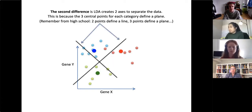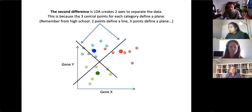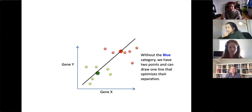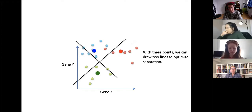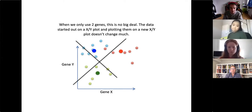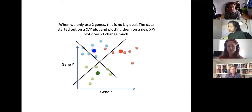The second difference is that LDA now creates two axes to separate the data. With three categories we have three central points, and three points define a plane. When we had two categories, we reduced two-dimensional or even three-dimensional data to a 1D line. With three categories we now have a new X and Y axis. With just two genes this doesn't seem exciting, but with 10,000 or 20,000 genes creating two axes that maximize separation of three categories becomes very powerful.